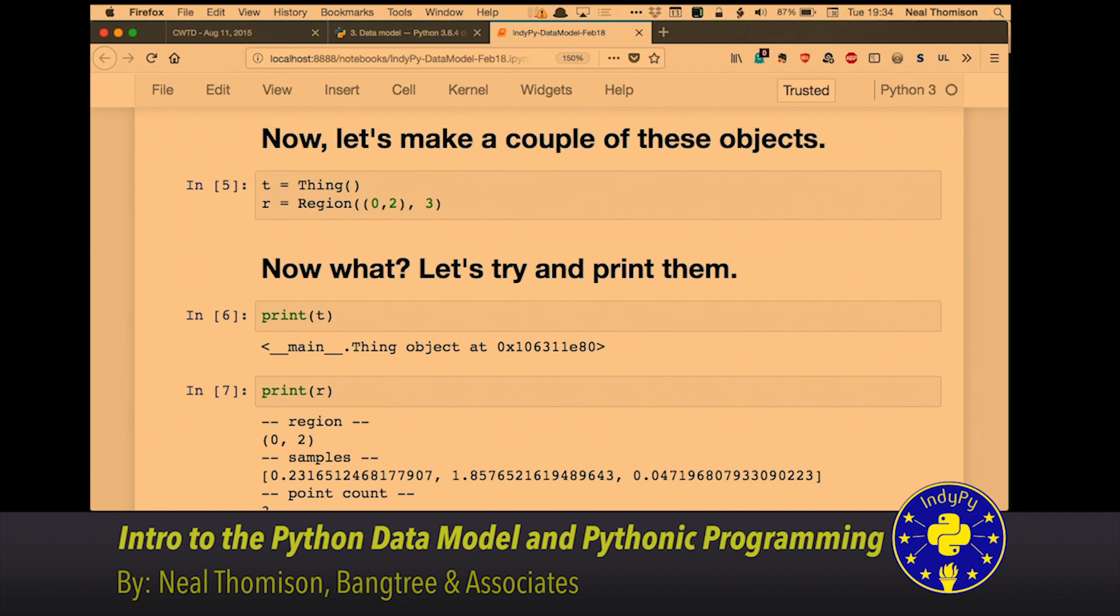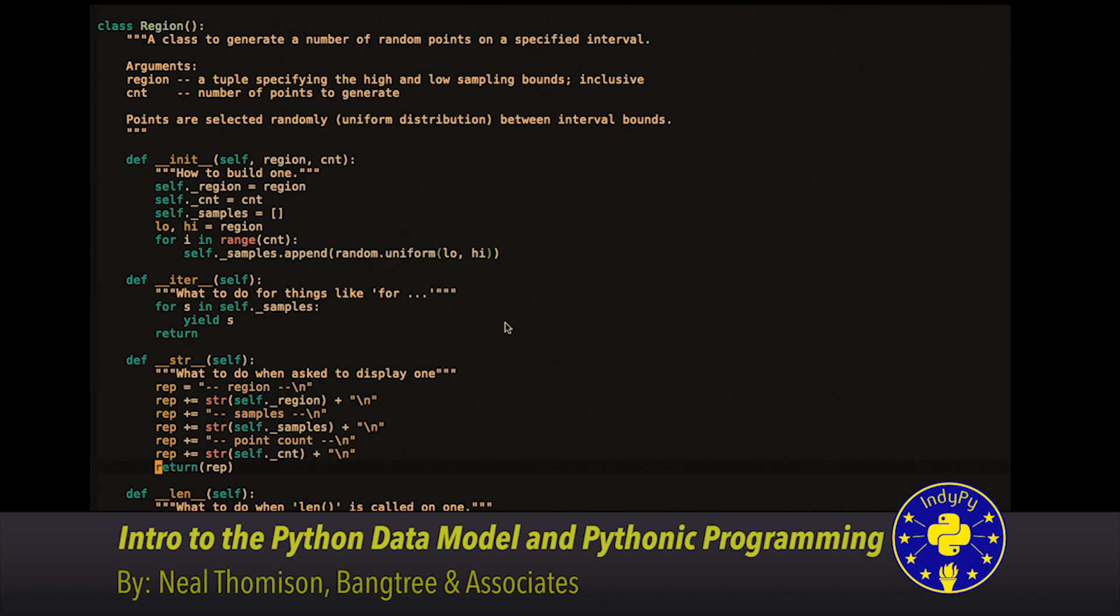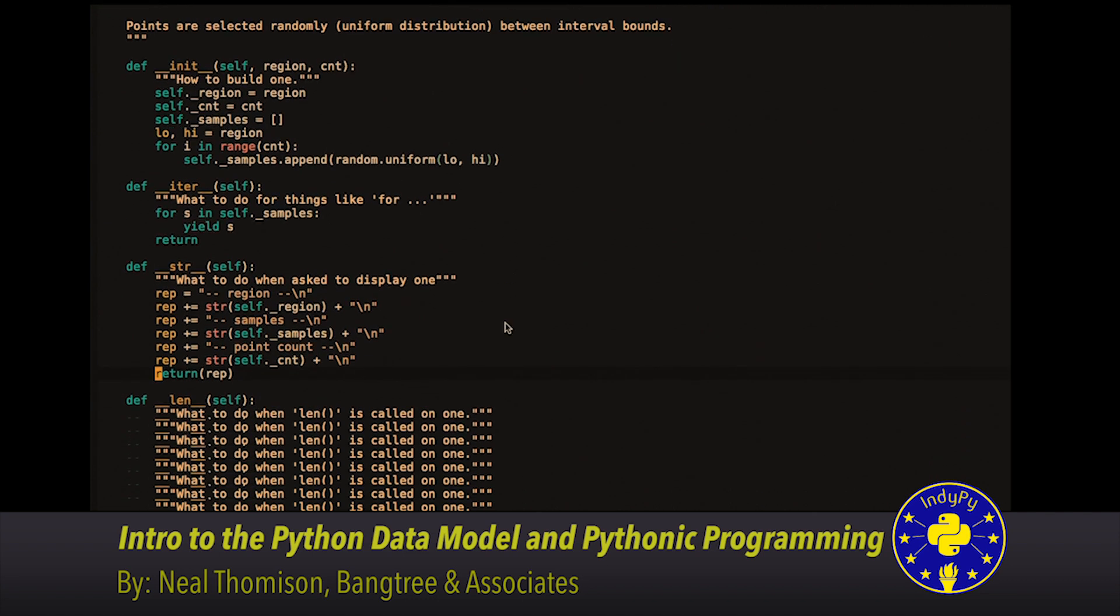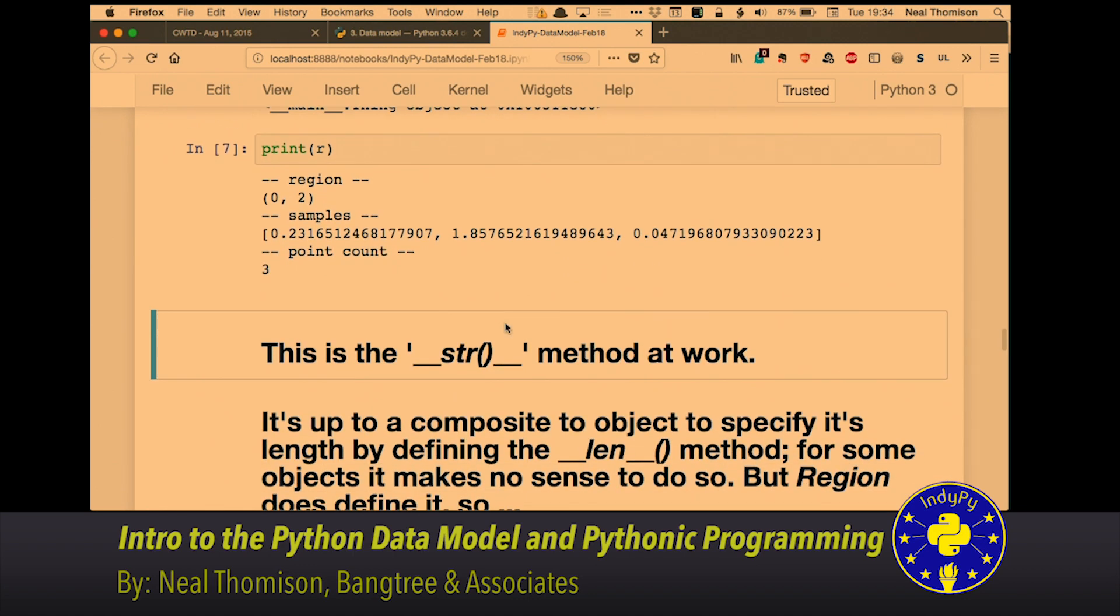For ours, because it's kind of a complicated thing, it's not like an integer, it's not like a hello world string, it's actually got a region between 0 and 2 and a number of samples in it and a point count. So, if we were to look at how that's done, it's just a method right here, string, when somebody asks you to display, and I built up my own thing, because it's a method in the object, so it's got full access to all the private elements of that object.